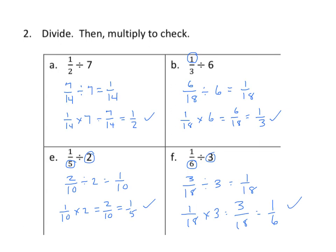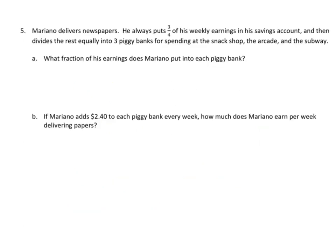I'm going to do some pretty difficult word problems here now. The first one is from the practice set. And the second one is from the homework. Okay, Mariano delivers newspapers. He puts three-fourths of his savings into his savings account. And then divides the rest equally into three piggy banks for spending at the snack shop, the arcade, and the subway. What fraction of his earnings does he put in each piggy bank? Well, let's start with our tape diagram. We don't know the whole. But we do know that he saves three-fourths. What do we have left? Well, that's one-fourth, and this saves. And this is left. What does he do with what's left?